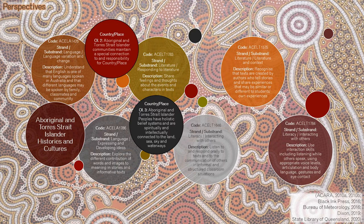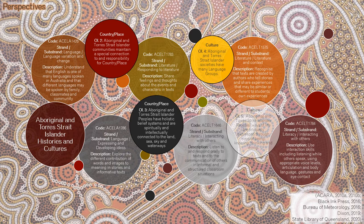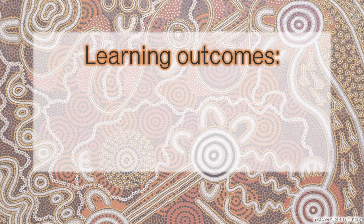Aboriginal and Torres Strait Islander societies have many language groups. Wiradjuri language is one of many hundreds of indigenous languages. Towns or local languages include Murrawari, Wakagamara, and others. Aboriginal and Torres Strait Islander peoples' way of life is uniquely expressed through ways of being, knowing, thinking, and doing — such as the way Auntie Gloria Wayland identifies using animal behavior to predict a weather event.